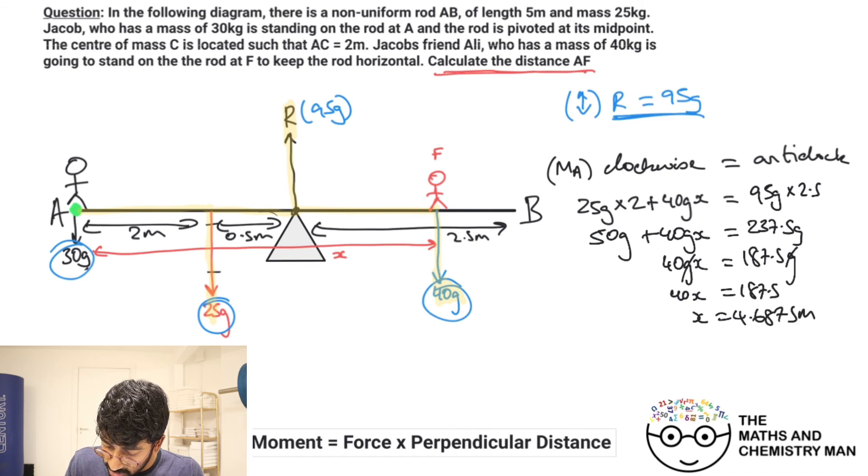4.6875 meters. If we're going to go to three sig figs, let's go with 4.69 meters. So that means Ali is standing at a distance of 4.69 from A, so a fair bit past the midpoint. Midpoint is 2.5, so he's only a little bit from the end of the seesaw, which seems reasonable.